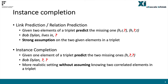Link prediction is the task that, given two elements of a triplet, predicts the missing one. However, this task has a strong assumption on the two given elements in a triplet, which have to be correlated, resulting otherwise in meaningless predictions. For example, given the head entity and the relation Bob Dylan and Lives-in, predict the tail entity.